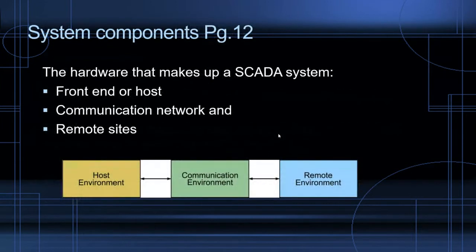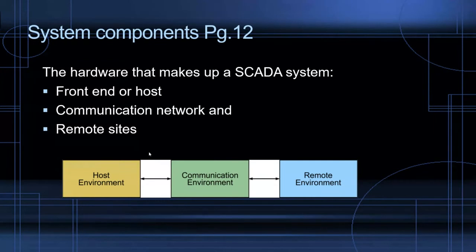For SCADA system components, we break the system into three basic sections: the front end or host, the communication network, and remote sites. The host environment is where your HMI and end-user components are — it could be an office in Calgary or a host site in the field. The communication environment is somewhere between the two, and then of course there are the remote sites themselves.